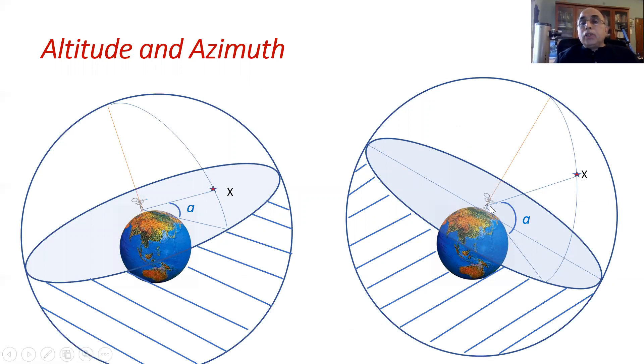The problem with this alt-azimuth or the horizontal coordinate system is as the observer changes his or her position on the earth, then your horizon changes and hence the altitude changes.